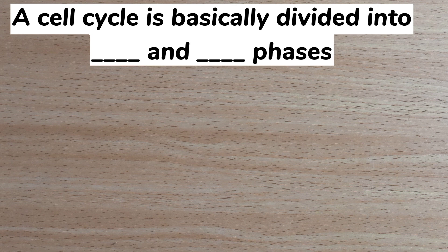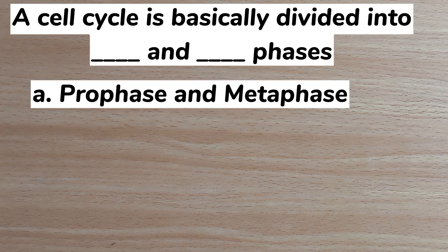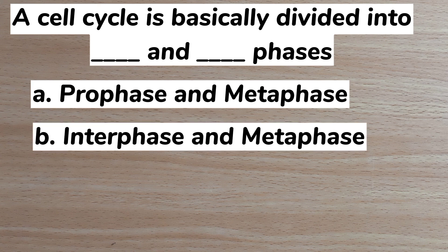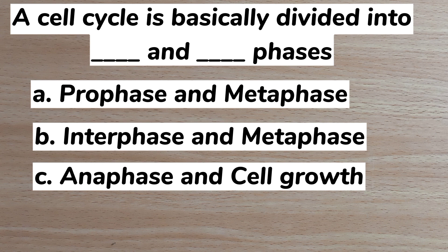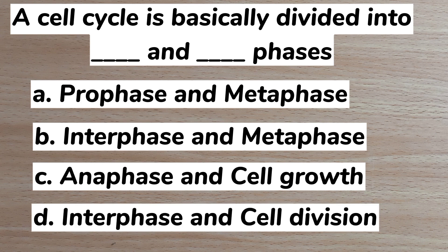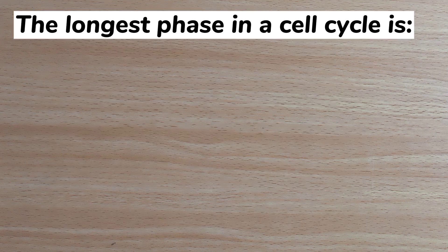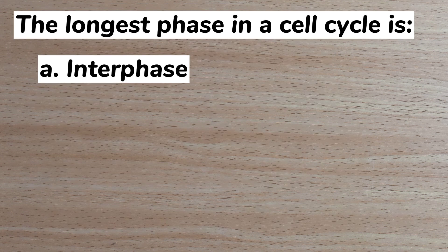Number three: a cell cycle is basically divided into dash and dash phases. A. Prophase and metaphase, B. Interphase and metaphase, C. Anaphase and cell growth, D. Interphase and cell division. Answer: D. Interphase and cell division. Number four: the longest phase in the cell cycle is — A. Interphase, B. Prophase, C. Metaphase, D. Telophase.